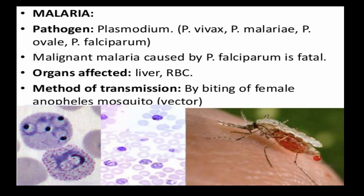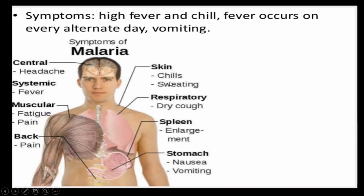Malignant malaria caused by Plasmodium falciparum is very fatal. The organs affected by malaria are the liver and red blood cells. The method of transmission — the epidemiology — is that it is spread by the bite of a female Anopheles mosquito, which acts as a vector. A vector is an organism which carries the pathogen. In malaria, the vector is the female Anopheles mosquito and the pathogen is Plasmodium.